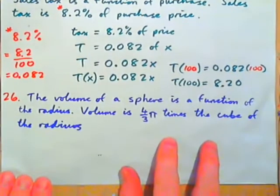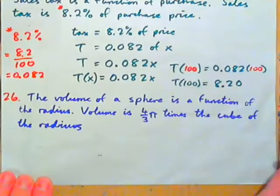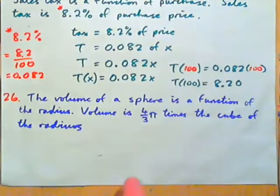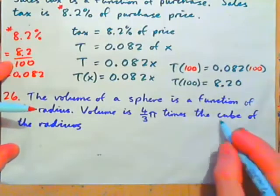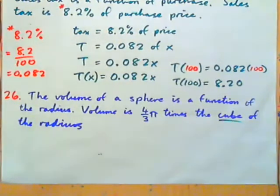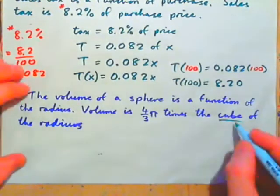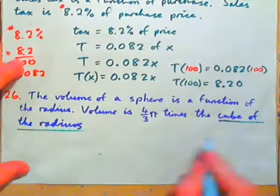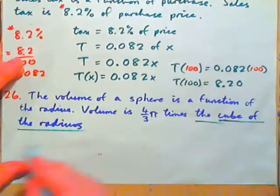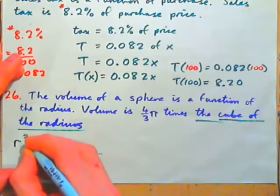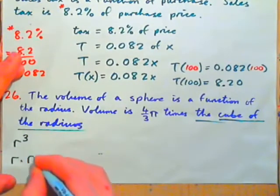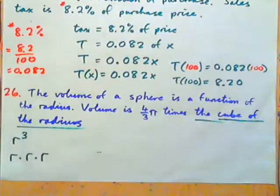Now, exercise 26. The volume of a sphere is a function of the radius. Volume is 4 thirds pi times the cube of the radius. So, interesting. Volume is 4 thirds pi times the cube of the radius. What do you think the cube of the radius is? That's the radius cubed, or r to the power of 3, which is r times r times r, r cubed.